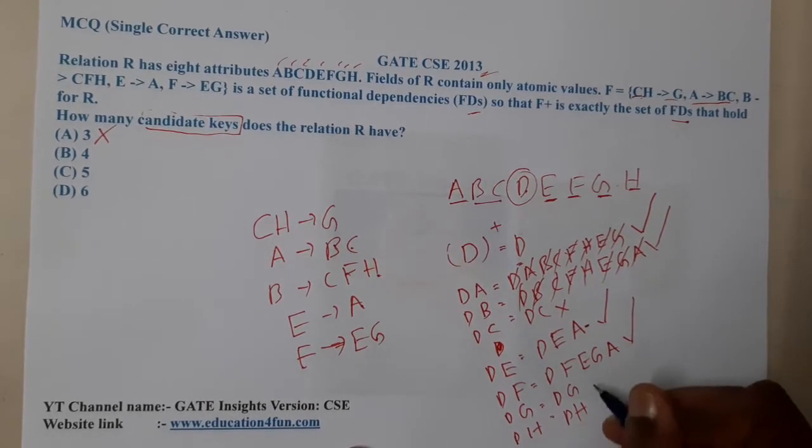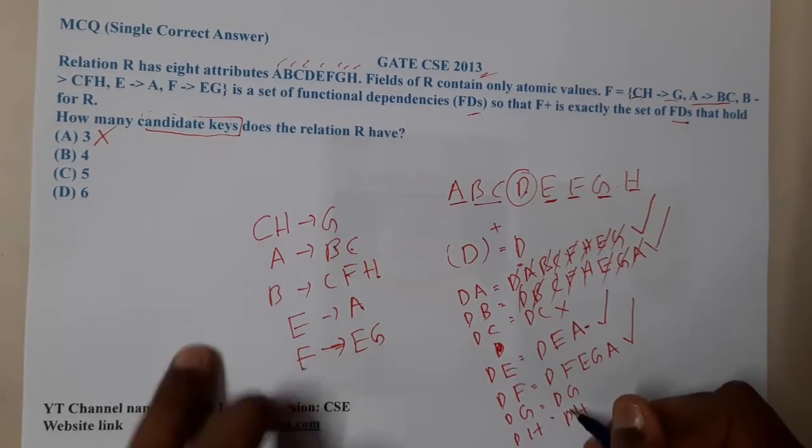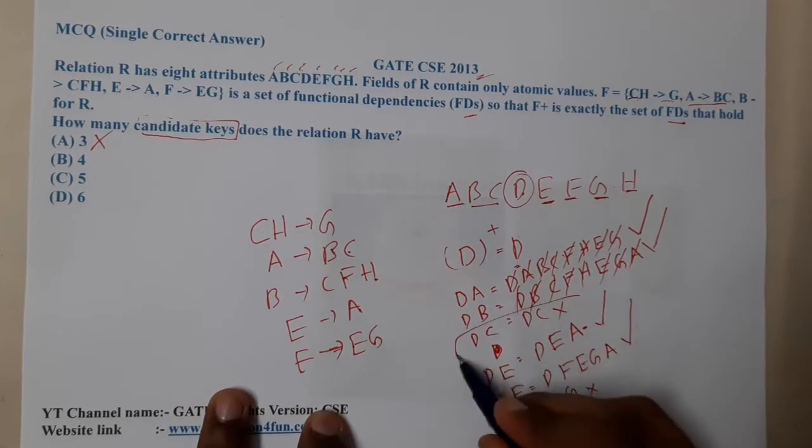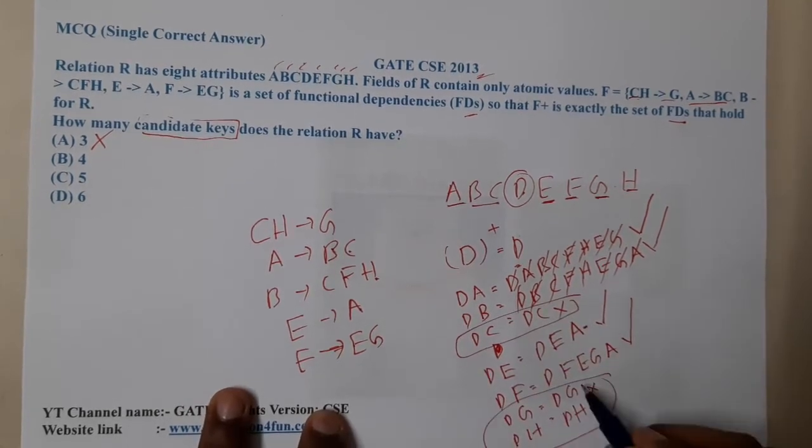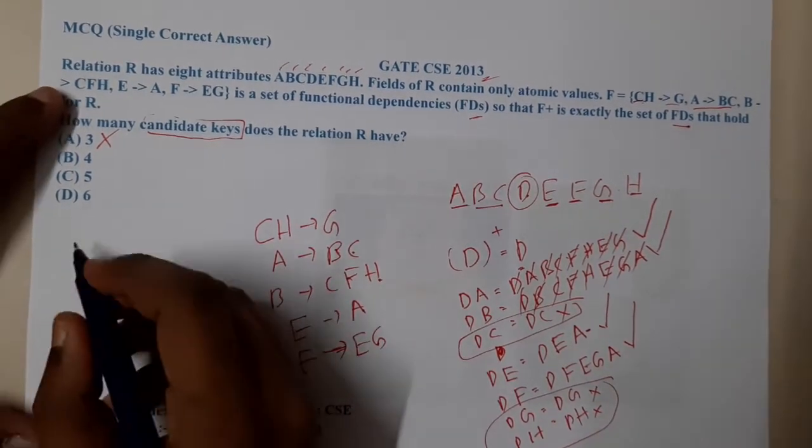Moving on to DG. From G, I cannot get anything. H also, I cannot get anything. We have cancelled these three things. Let us try making combinations with respect to them.